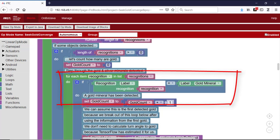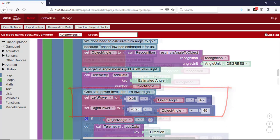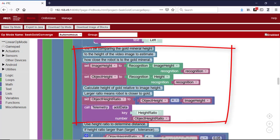If a gold mineral is detected, it first uses the estimated angle to calculate a pair of motor speeds that will turn the robot towards the mineral. The greater the angle, the greater the power levels. It then calculates the ratio of the apparent height of the mineral to the height of the video image.